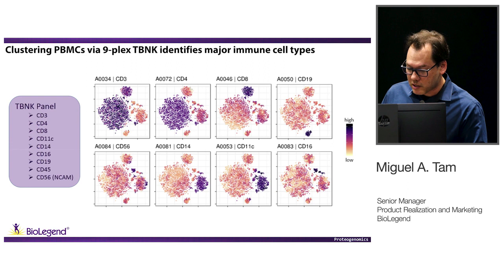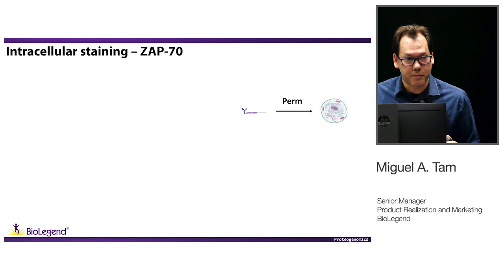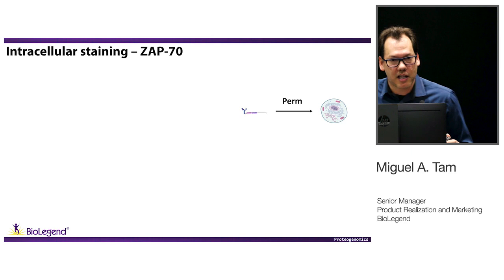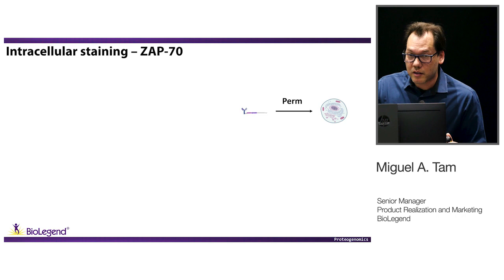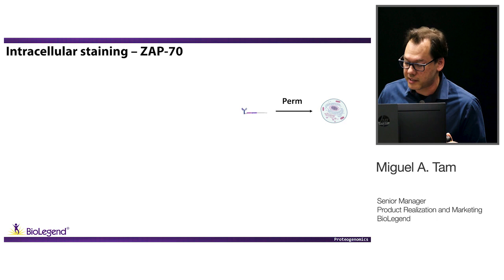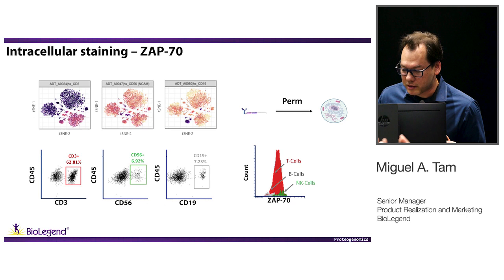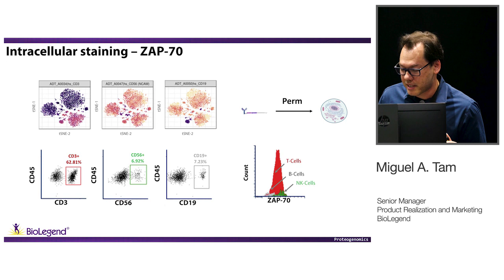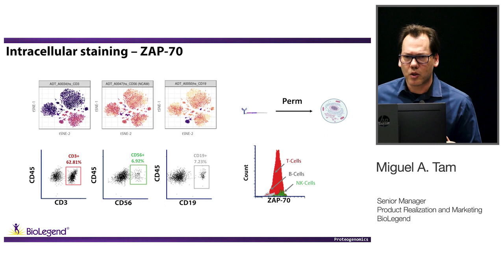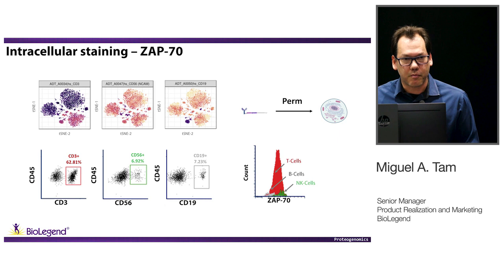The second most common question I get is: what about intracellular targets? You've shown surface markers, but what happens with intracellular targets? We're working on that. The question is how to get these antibodies into cells. I'm showing you this example of ZAP-70 — in the tSNE plots and dot plots you can see that in T cells and NK cells there is high expression of ZAP-70, while B cells don't express high levels of ZAP-70. We are working hard to optimize the intracellular staining protocol and have antibodies available against intracellular targets.